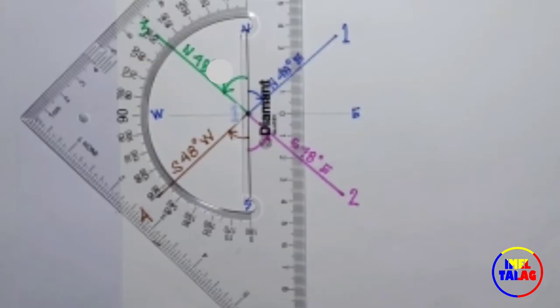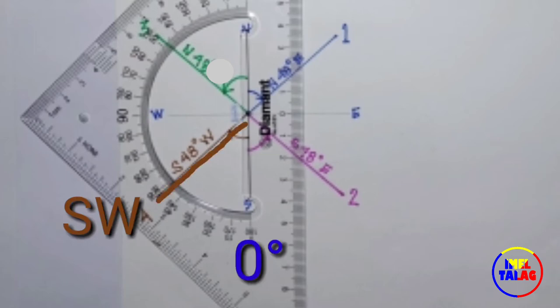And if the line direction is going southwest, the zero degrees is placed on the south and 90 degrees is placed on the west.